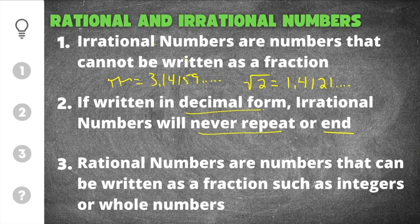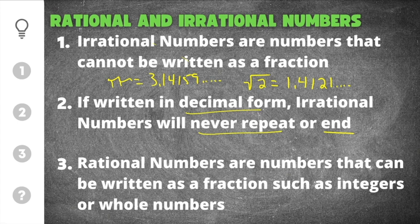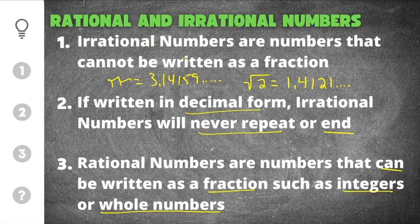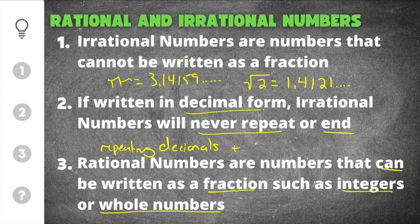Rational numbers on the other hand are numbers that can be written as a fraction and they are things such as integers or whole numbers. Rational numbers have decimals that do end and do repeat. So they will have repeating decimals and they will have decimals that end which are called terminating decimals.